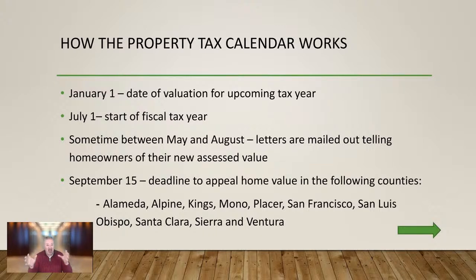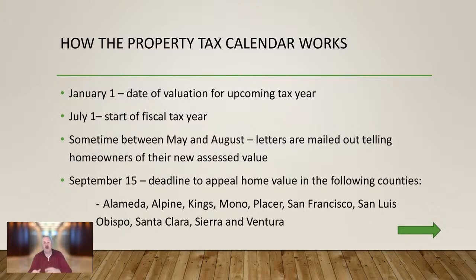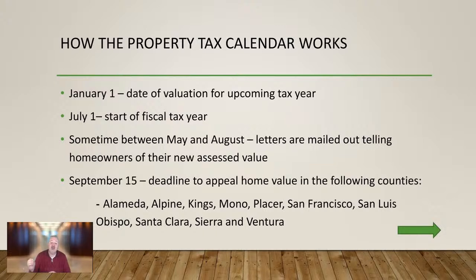Even though it's a little confusing, the value on January 1st is what they use to charge you for the upcoming July 1st to June 30th tax year. Then sometime between May and August, letters are mailed out telling homeowners of their new assessed value. Then you have a deadline to appeal that assessed value.